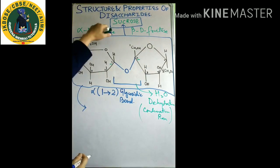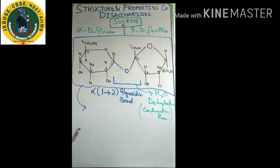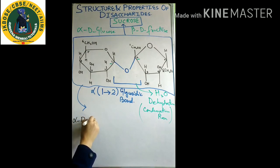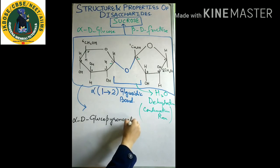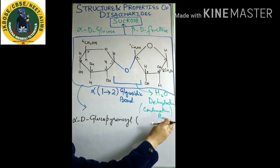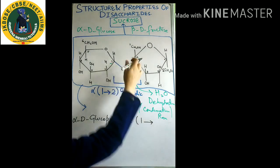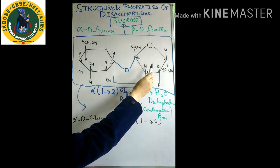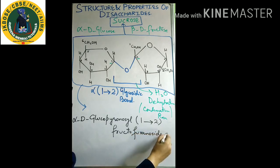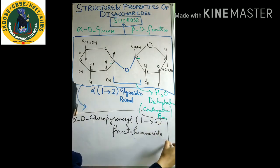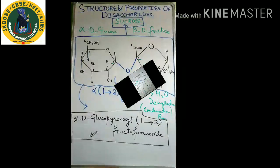Let us give the complete name for sucrose. It is: alpha-D-glucopyranosyl — pyranosyl because it's a six-membered ring — then the bond information (1→2) — then beta-D-fructofuranoside — furanoside because fructose is in furanose form. So the complete chemical name is alpha-D-glucopyranosyl (1→2) beta-D-fructofuranoside. There is one important point regarding optical activity of disaccharides. All of them — be it sucrose, maltose or lactose — are dextrorotatory, meaning they rotate plane polarized light towards the right direction.